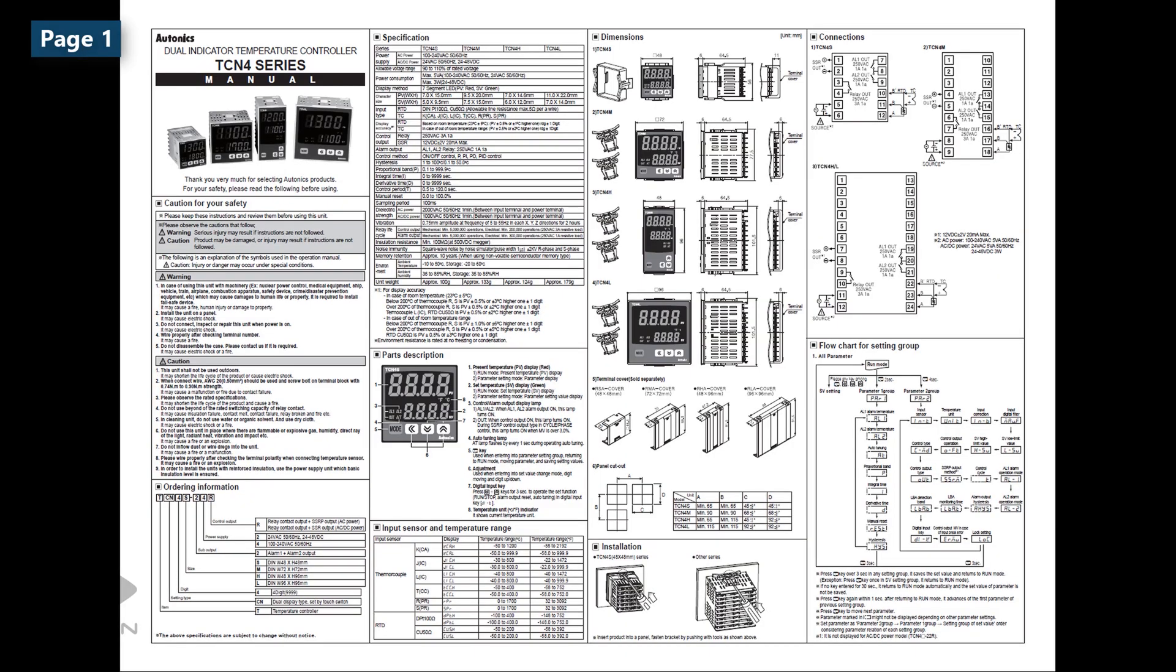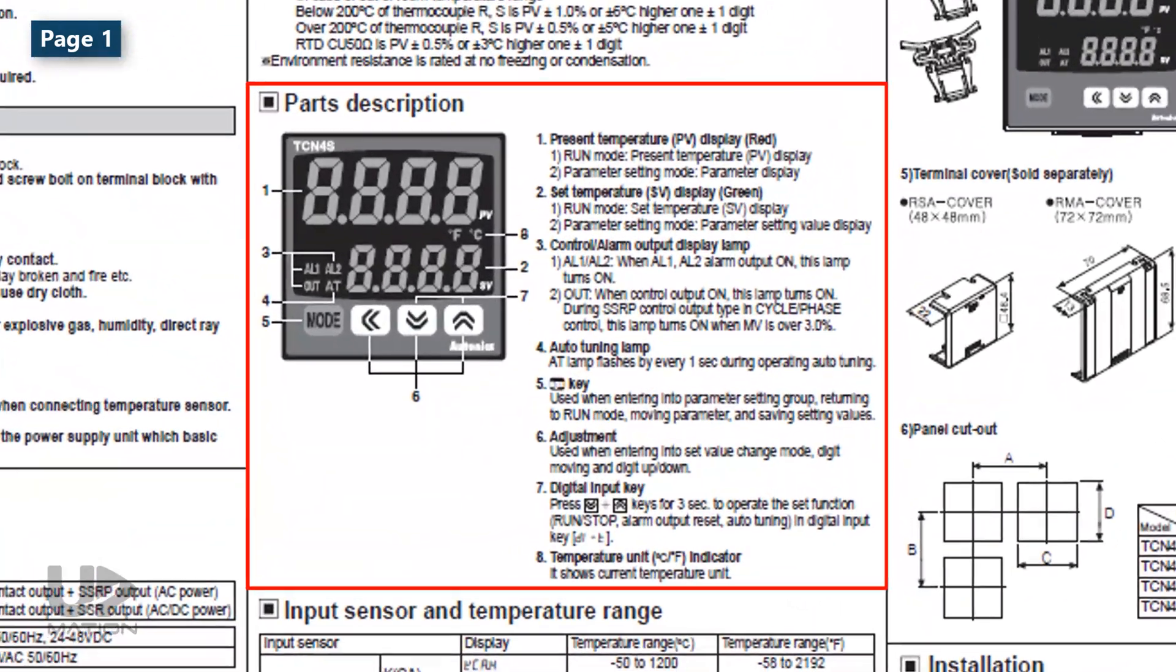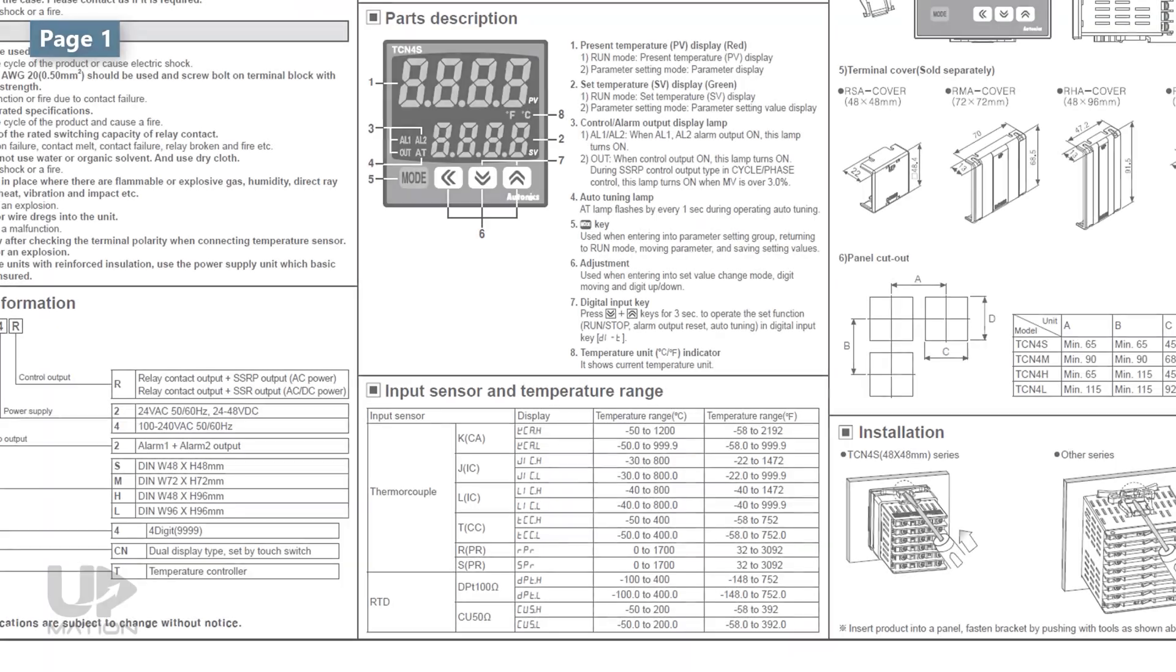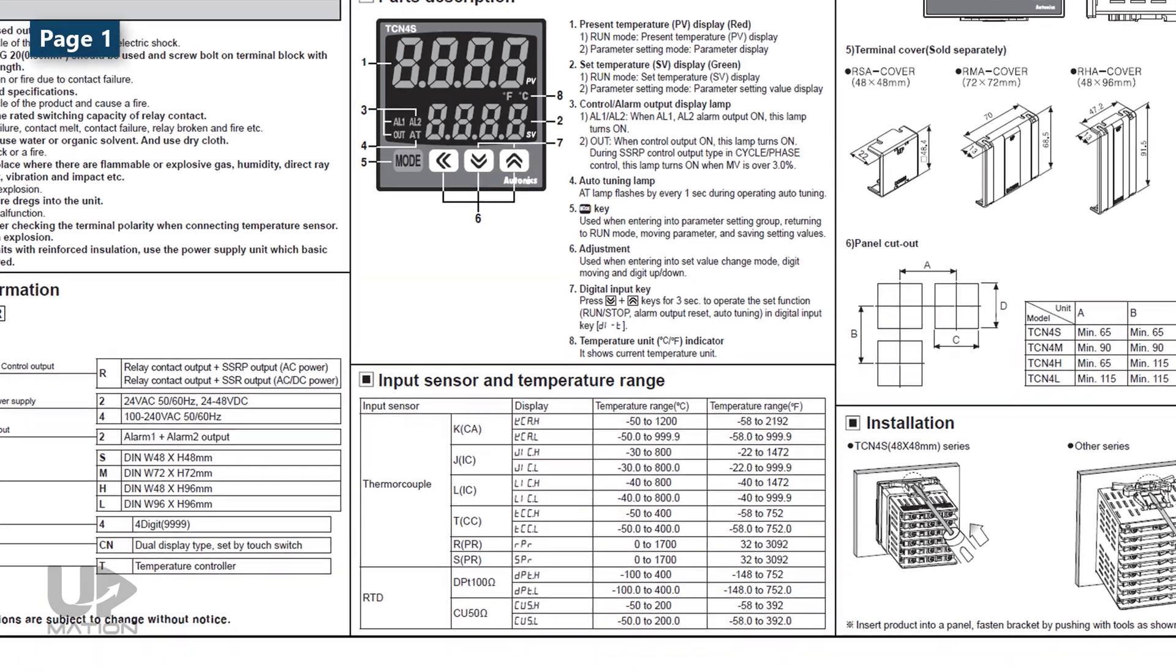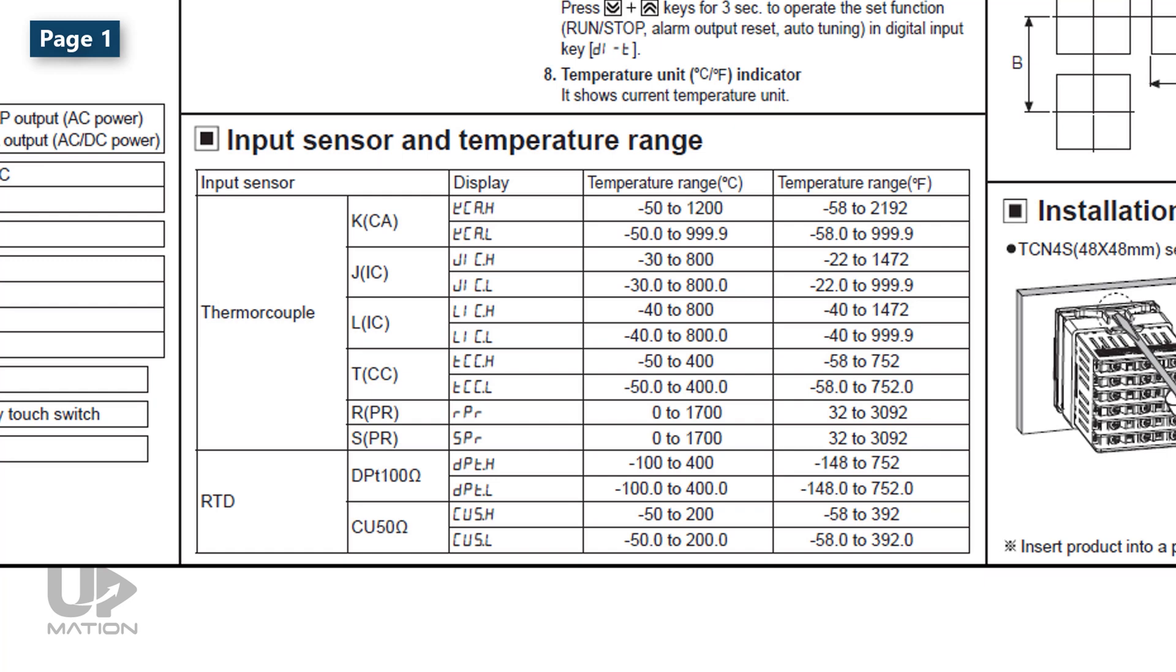First off, we should get to know the buttons and what they do. Then, according to the type of our temperature sensor and its measurement range, we should select the appropriate setting. For instance, here we have an RTD with a range of minus 100 to 400 degrees centigrade. So afterward, we need to select this parameter.